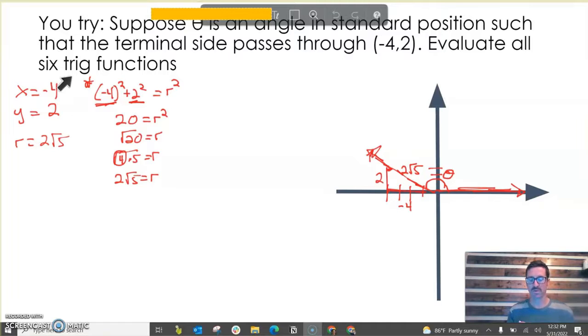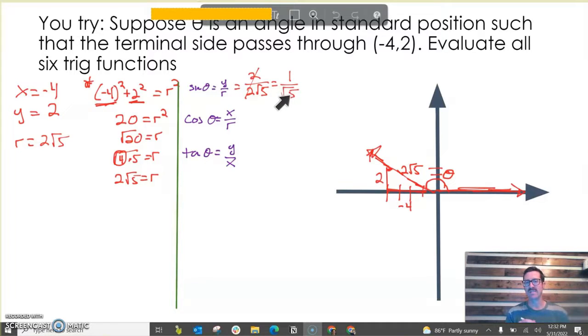This one's going to involve more algebra because we have the radical and we're doing all six trig functions. Let's start with our original three, then we'll do the reciprocal functions. If sine of theta is y over r, that's 2 over 2√5. The 2 over 2 can simplify, but then we need to rationalize. I don't want to leave the radical in the denominator. So we multiply by √5 over √5, and our final form is √5/5. So that's sine theta.